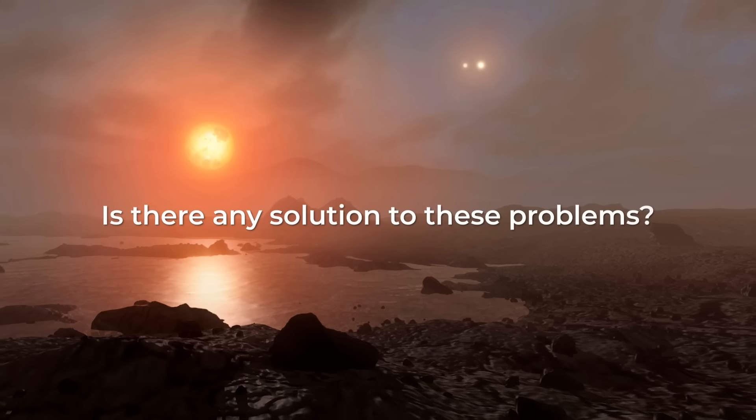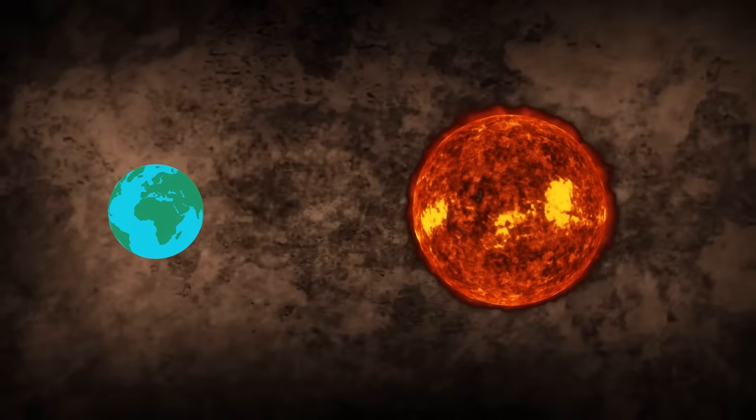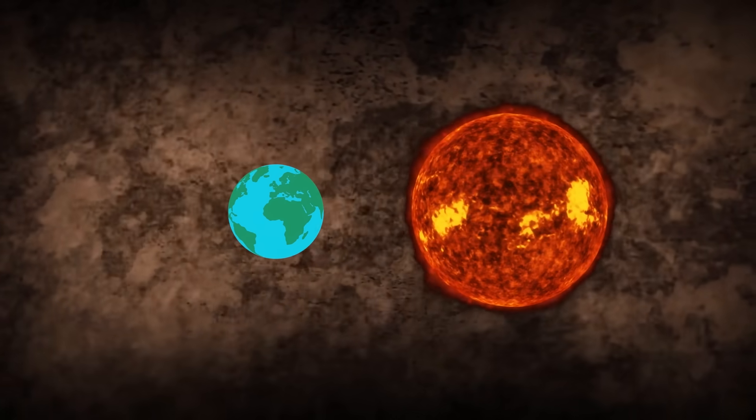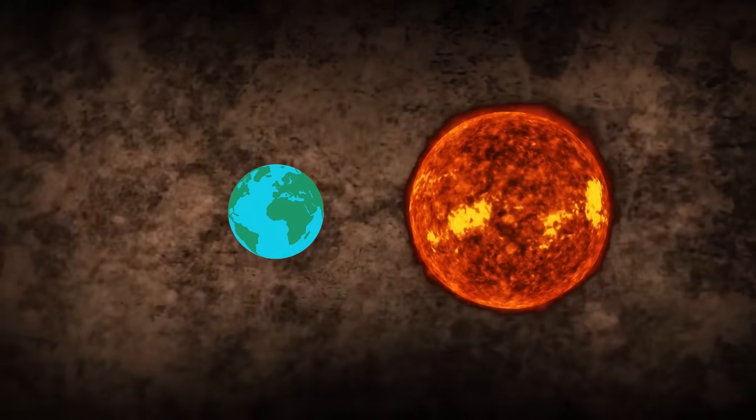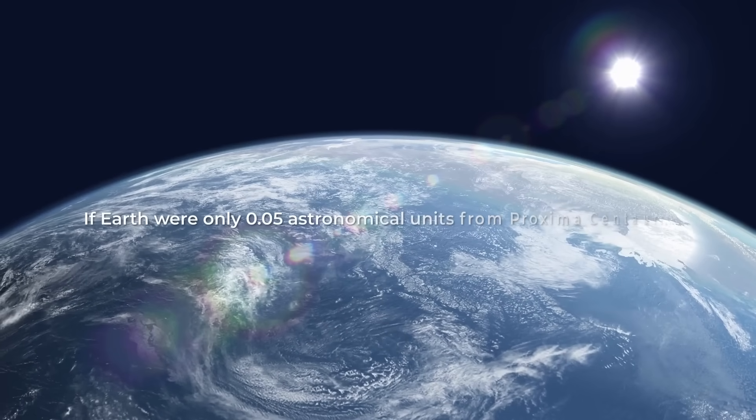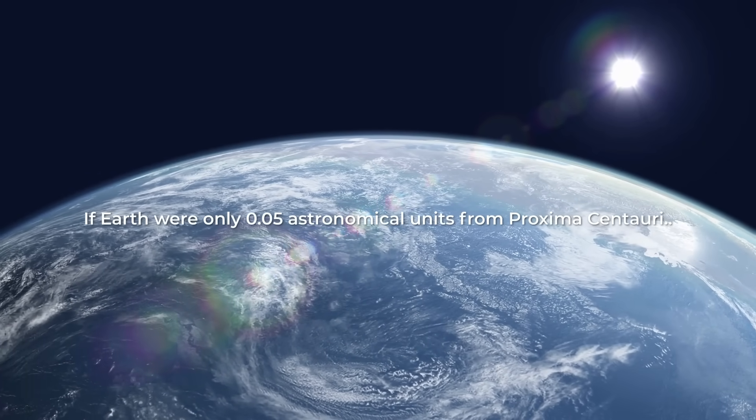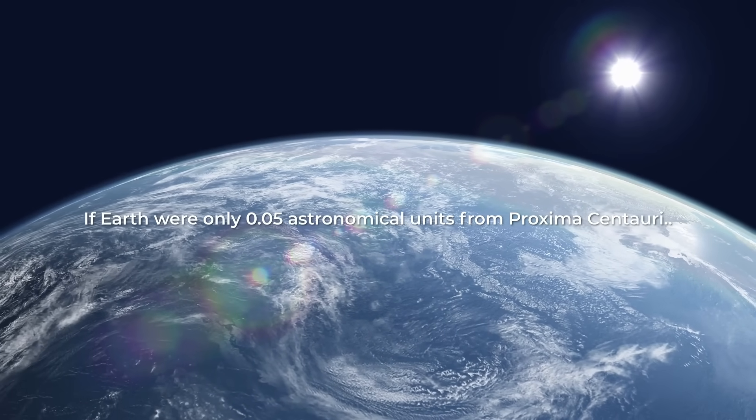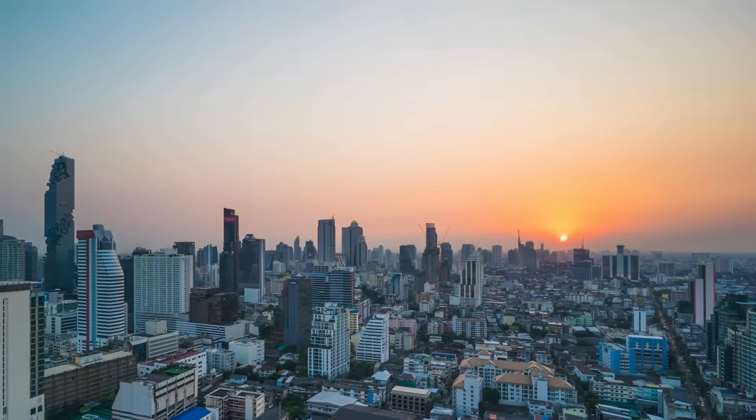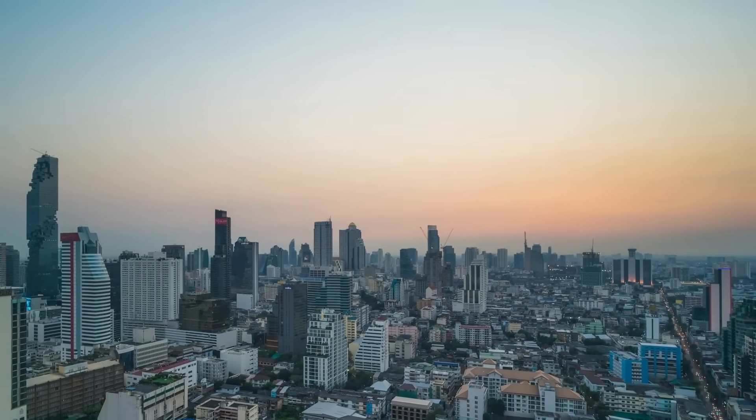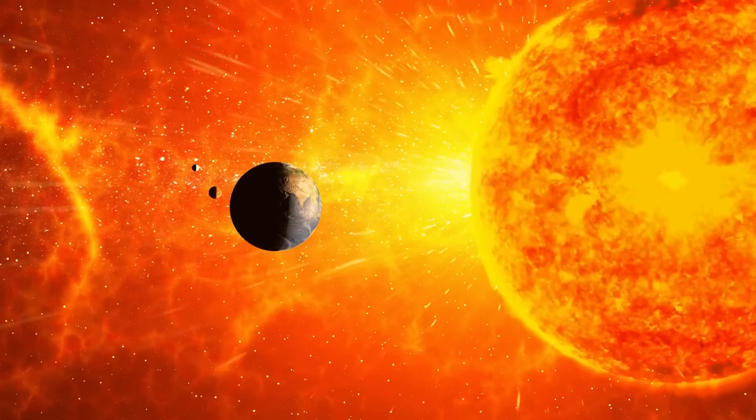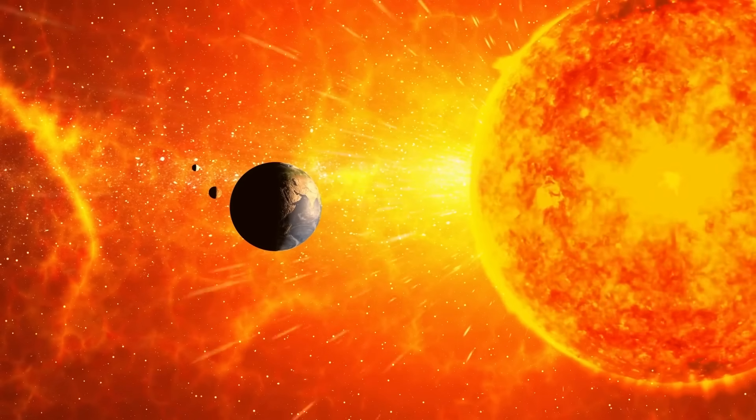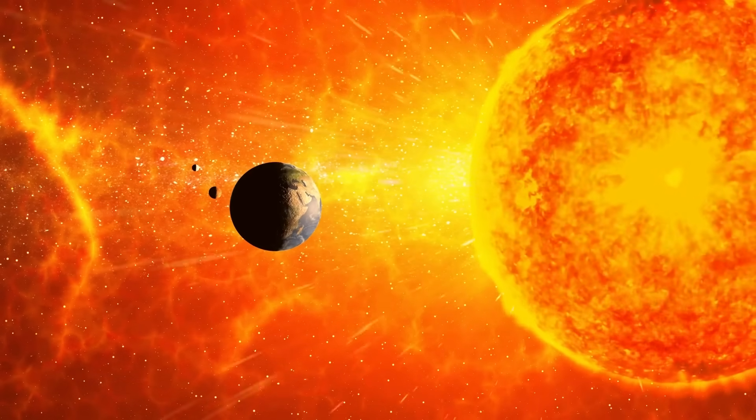Is there any solution to these problems? One possible solution would be for the Earth to be much closer to Proxima Centauri. If the Earth were only 0.05 astronomical units from Proxima Centauri, it would be similar in temperature to what it is today and still be within the habitable zone. But this would also mean that the Earth would be exposed to the intense radiation and solar flares emitted by the red dwarf.